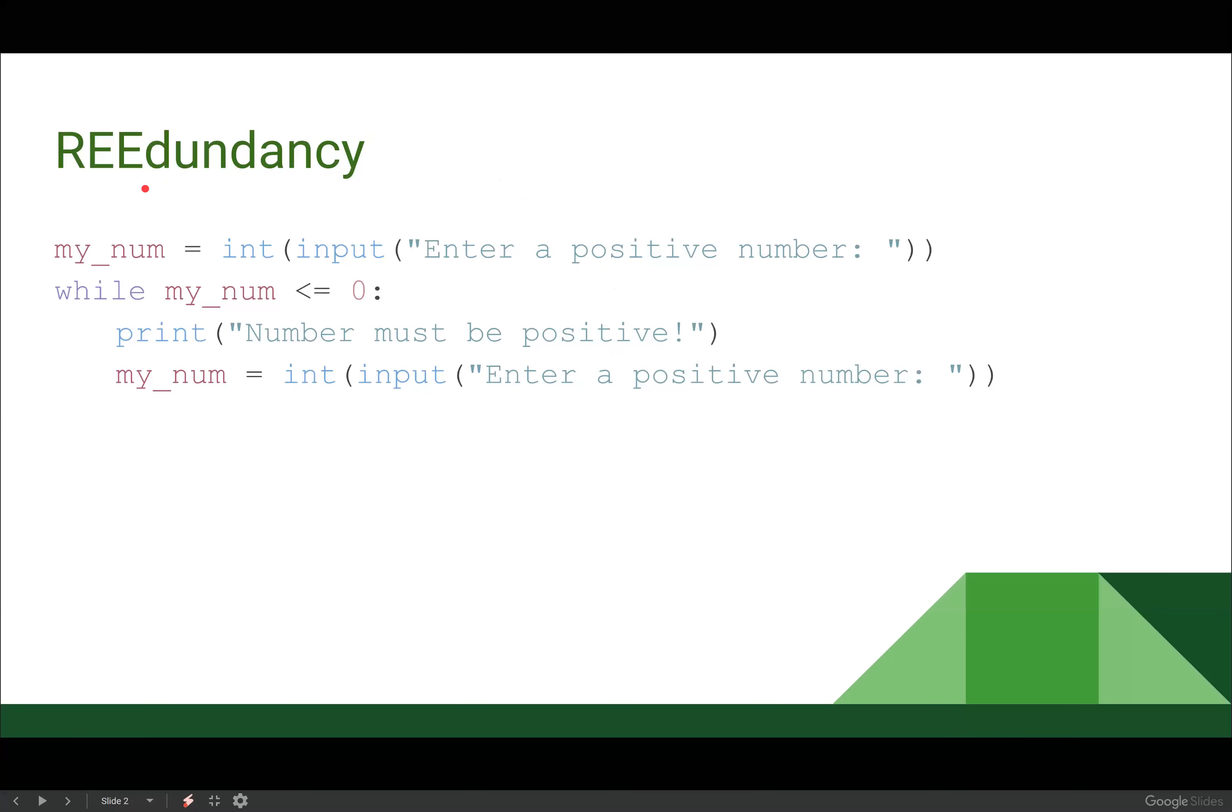So if we look at this program, I don't have anything after my_num is changing, but I do have a bit of redundancy here. I have my_num equals int input enter a positive number at the top. While my_num is less than or equal to zero, I'm going to tell the user, hey, that number has to be positive. And then I'm re-asking for my_num from the user.